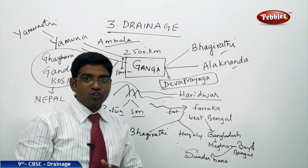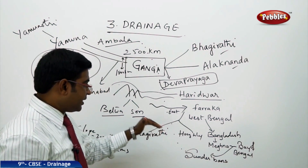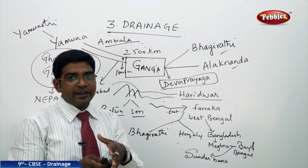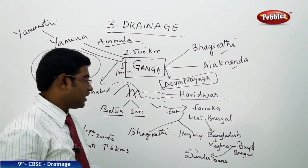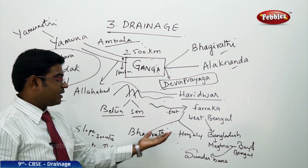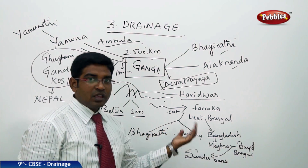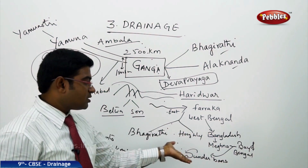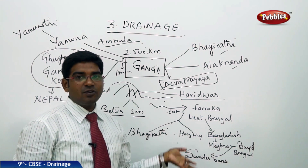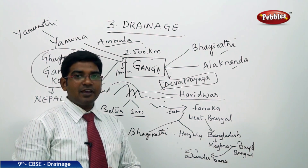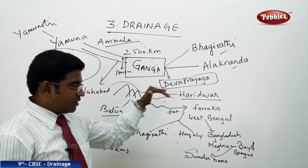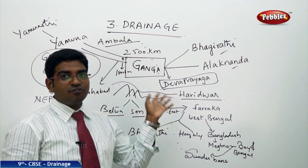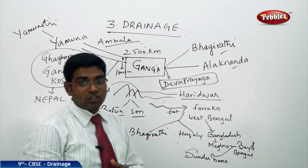After entering into West Bengal, the river bifurcates its entire course. Along with the main course, it gets two more bifurcations: Bhagirathi and Hooghly. The main course then enters into Bangladesh, where the tributary is named Meghna. Finally, it creates the beautiful delta region of Sundarbans before joining the Bay of Bengal.